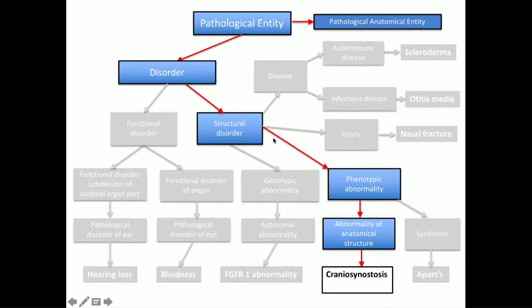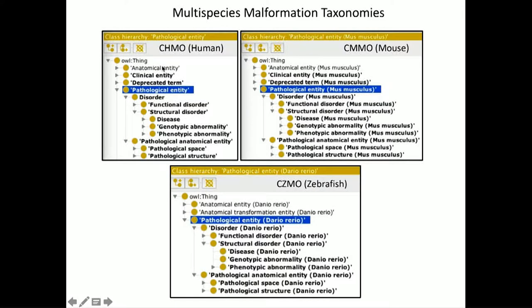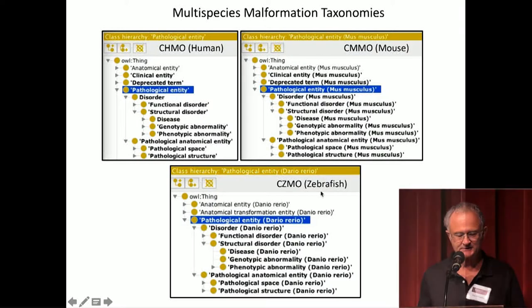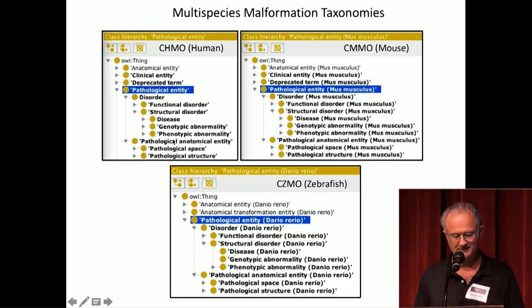We're concentrating on structural disorders and phenotypic abnormalities like craniosynostosis on the disorder side. These are being represented in the standard tool called Protege, developed at Stanford. Here you can see the human, mouse, and zebrafish pathological entities, disorders, and pathological anatomical entities.